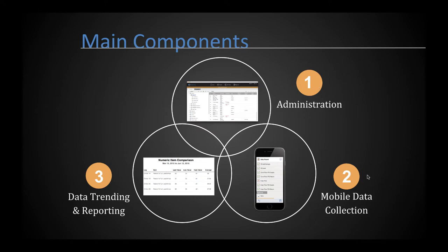Number two is mobile data collection. Once administrators have set up the software, data collection can be performed on either a smartphone or tablet running Apple's iOS or Google's Android platform. There is a free mobile app you can download that works on any modern mobile device. You can view historical data on the mobile device, but only a subset — for example, previous readings on a temperature gauge or notes taken a few days earlier. Mobile devices are really meant for data collection.